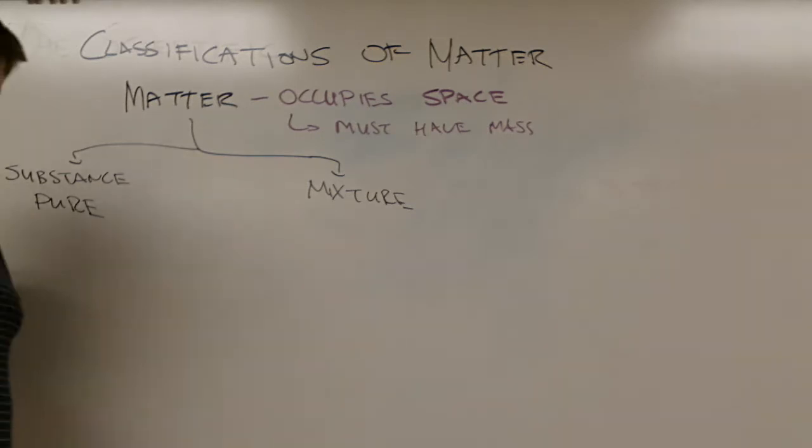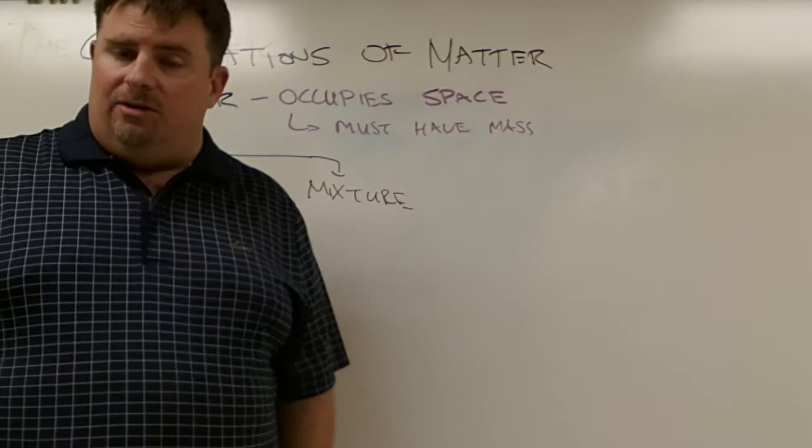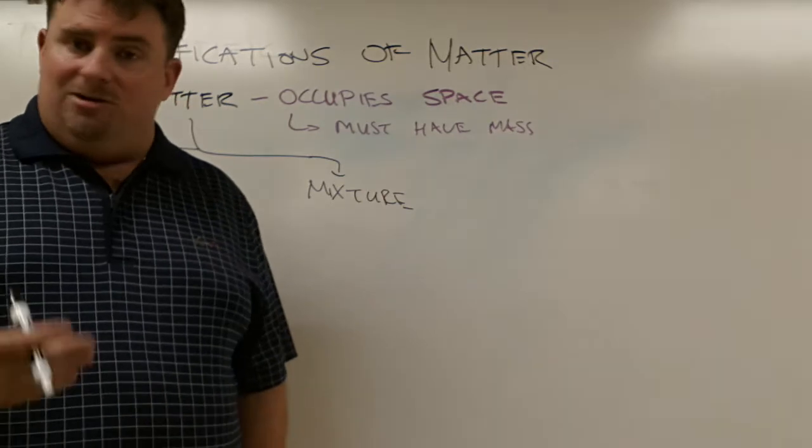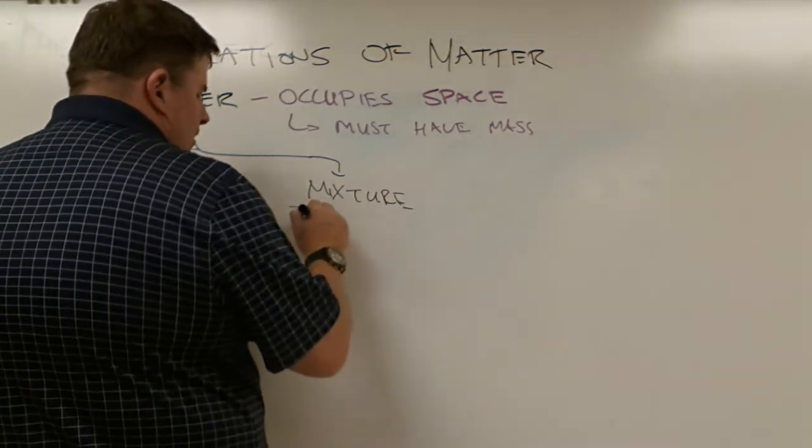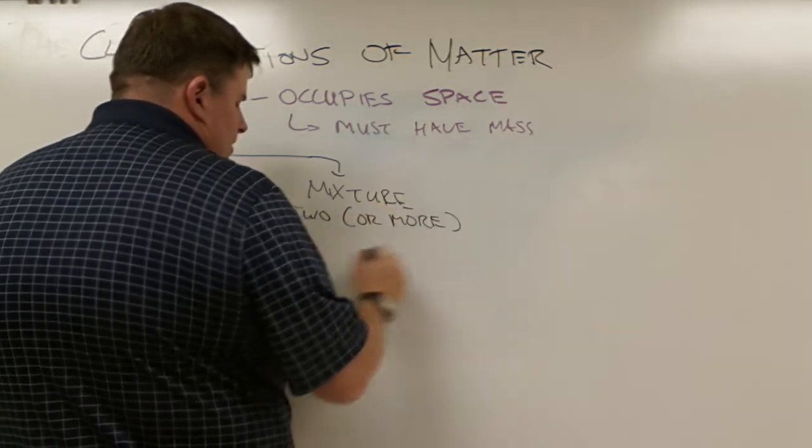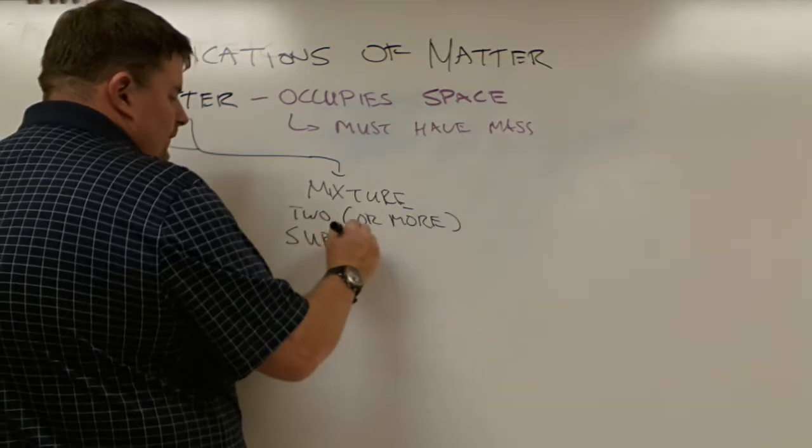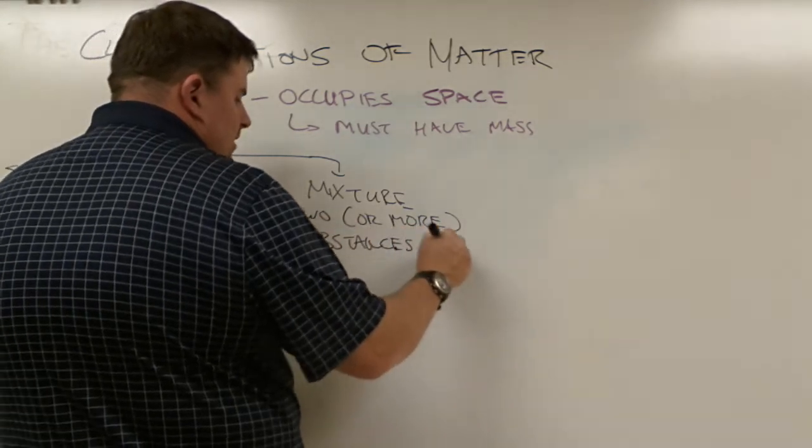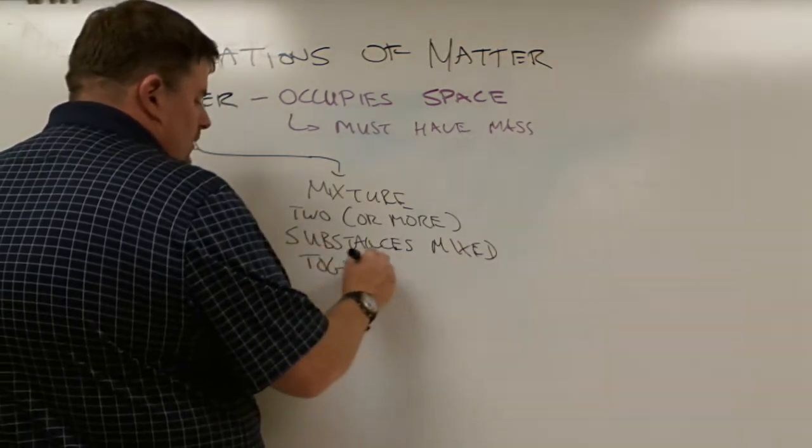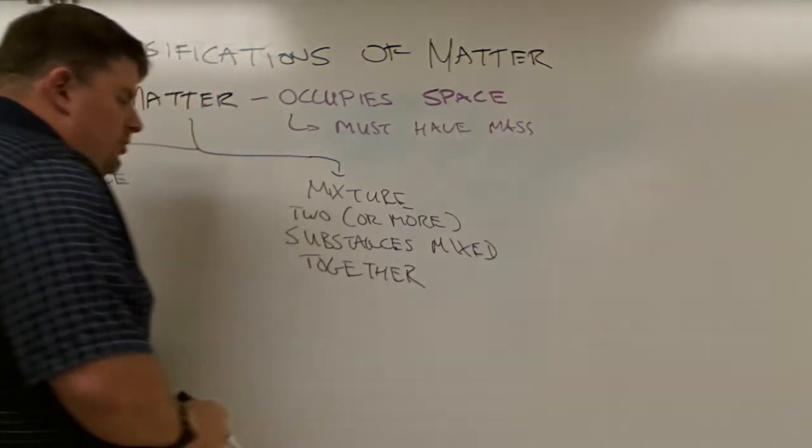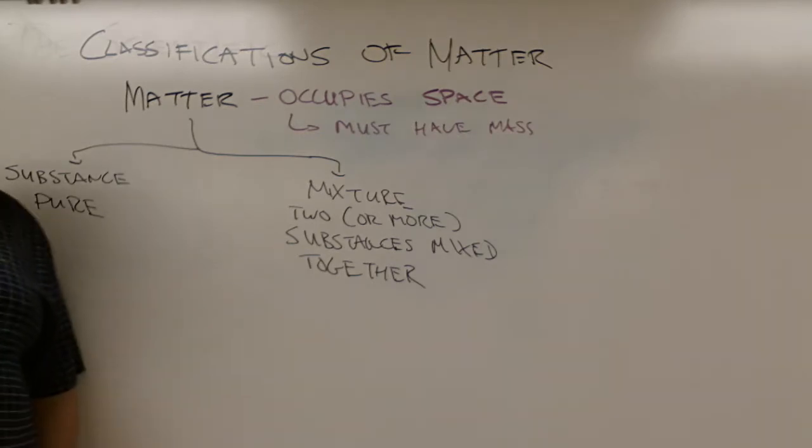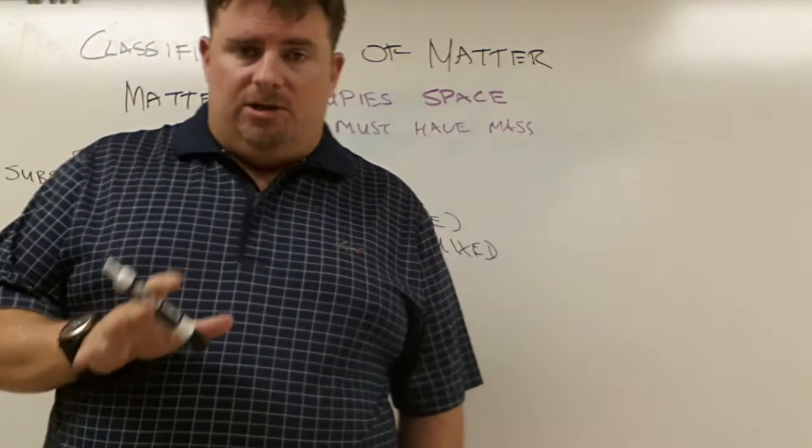A mixture on the other hand is when you have more than one substance mixed together. For example, I talked about pure water, but if you look at salt water, salt water is not pure water. It's a mixture. So this is two or more substances mixed together. And that's what matter is - you have a mixture and you have a substance.